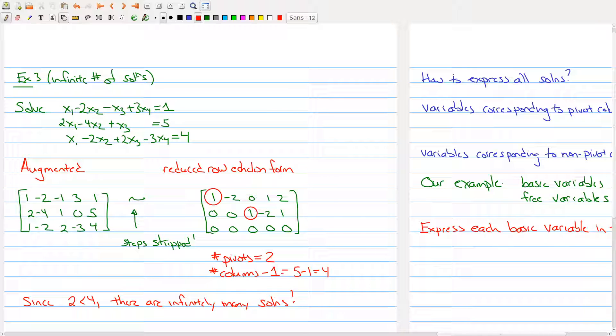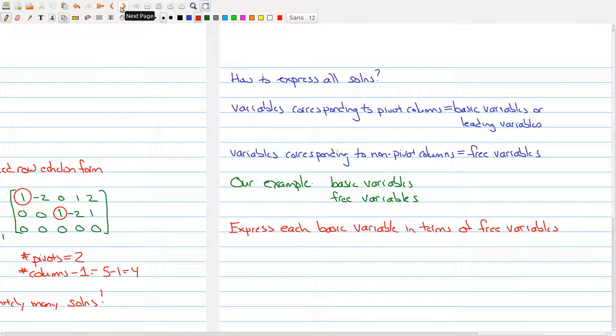And that's kind of what I had asked you to look at before the break. So the next question you should be thinking about is, well, okay, there's an infinite number of solutions. Does that mean we're just stuck? Can we actually say anything at all about these solutions? Or can we actually get our hands or describe all the solutions to a system of linear equations with an infinite number of solutions?